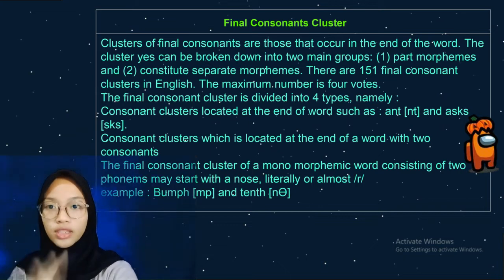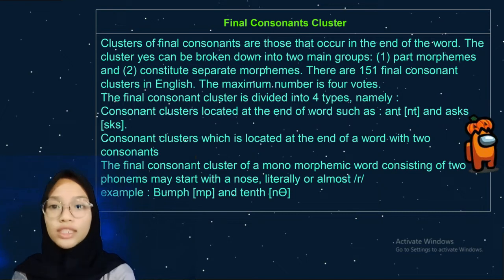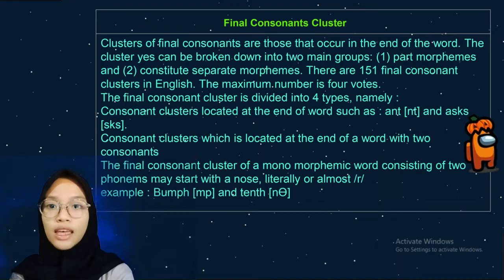The fourth type: consonant clusters at the end of a word consisting of three consonants. The last four word-final syllables consist of three consonants, such as A-J-S, D-S, X-X-S, and T.